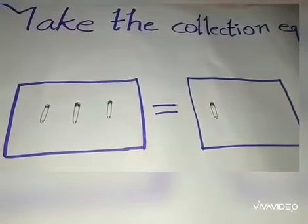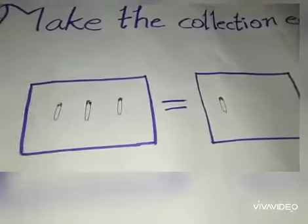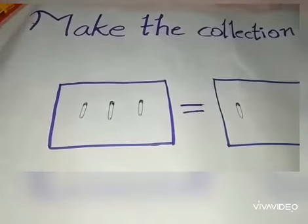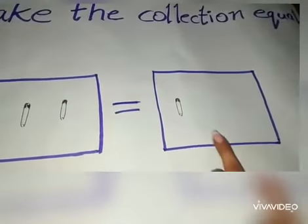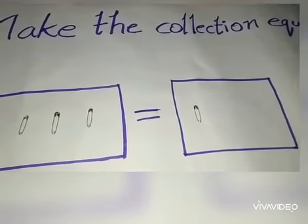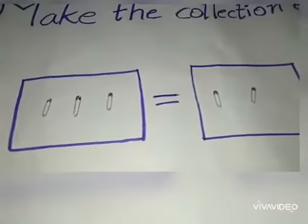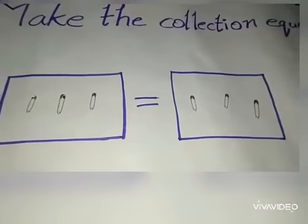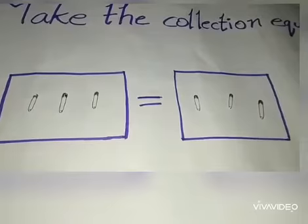Similarly, in the second example we can see some safety pins. Let's count. One, two, three. There are three safety pins in the first box and in the second box only one safety pin. So, how many safety pins do I need to make them equal? Yes, we need two more safety pins to make them equal. Now, we can see that the safety pins at both sides are equal.